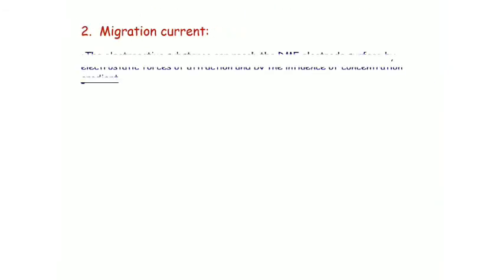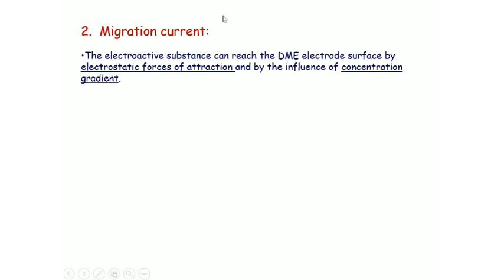The next factor is migration current. Electroactive substances can reach the dropping mercury electrode surface by electrostatic force of attraction and by the influence of concentration gradient. Electroactive substances — that is, charged species such as metal ions — present in the solution are attracted to the electrode in two ways: first, due to electrostatic force of attraction, and second, due to concentration gradient. However, we expect current only due to concentration gradient, not due to electrostatic force of attraction.